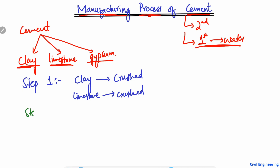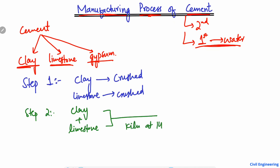In step number two, the clay and limestone are combined together and heated in a kiln at a temperature of 1450 degrees centigrade. They are heated and form clinker. Clinker is basically small gray balls produced from heating the clay and limestone together in the kiln at 1450 degrees centigrade.